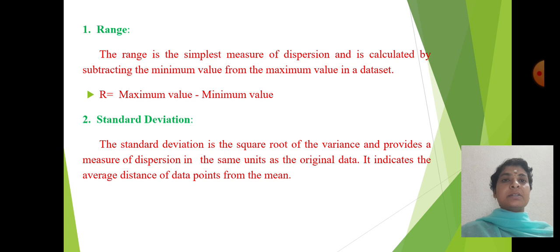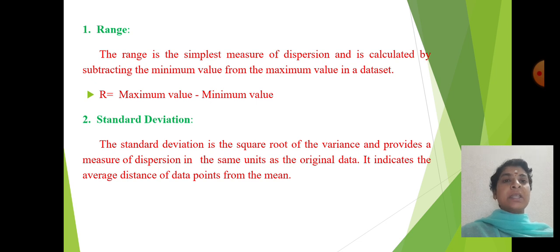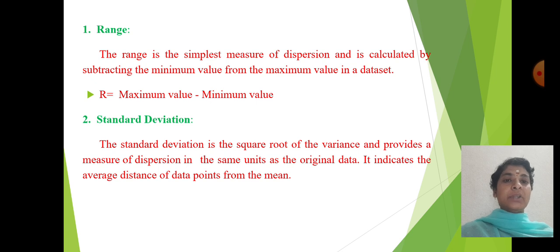The first one is range. The range is the simplest measure of dispersion and is calculated by subtracting the minimum value from the maximum value in a data set. Standard deviation is the square root of the variance and provides a measure of dispersion in the same unit as the original data. It indicates the average distance of data points from the mean.